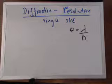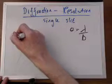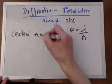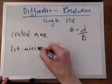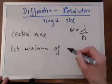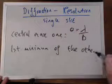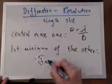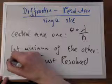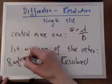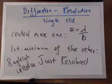So to be just resolved, the central maximum of one must be over the first minimum of the other. The central maximum must be directly over the first minimum, and that will be giving you just resolved. And this was proposed by Rayleigh as the Rayleigh criteria for resolution.